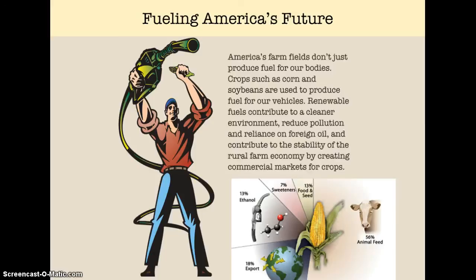Another issue with monoculture is that not all of the crops grown on the land are used for food. Corn and soybeans are two of the big crops on our industrial farms here in the United States. Looking at the chart, it shows what corn is used for. Only 13% is used for food or for seed, and 7% we use for sweeteners — things like high fructose corn syrup. We use corn to produce ethanol; most gas that you buy does contain ethanol from corn. 18% of our corn is exported. But the largest use — about 56% of the corn that we grow — actually goes to feed our animals.